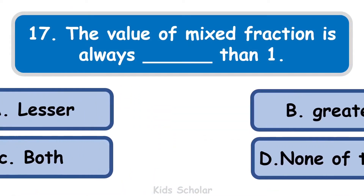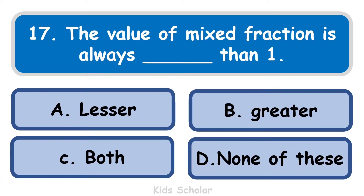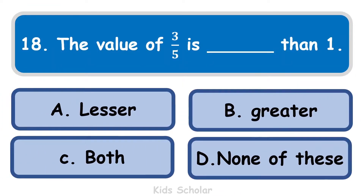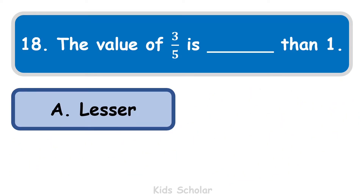Next question is: the value of an improper fraction is always dash than 1. It is always greater than 1. Next question: the value of 3 by 5 is dash than 1. The value of 3 by 5 is less than 1.